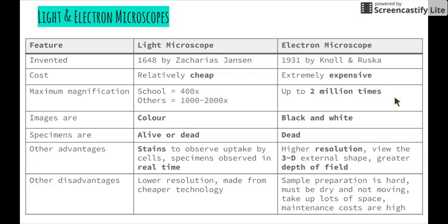Images through an electron microscope are viewed in black and white, and specimens must be dead because of the way the electron microscope works. We need to have very, very thin specimens to examine. Sample preparation can be quite difficult — the sample must be dry and must not be moving, hence why it needs to be dead.